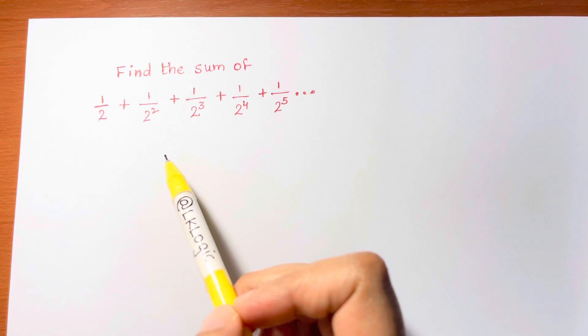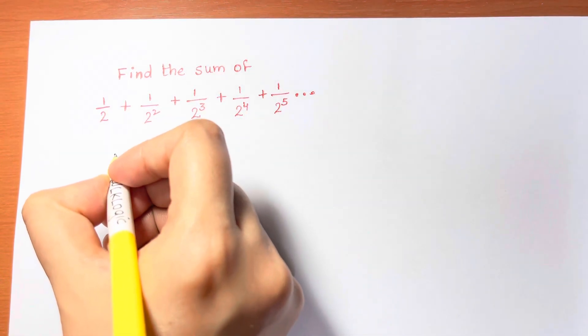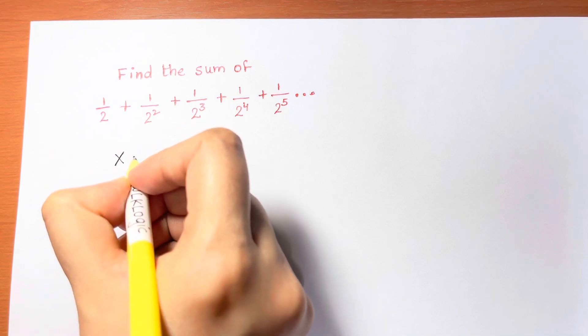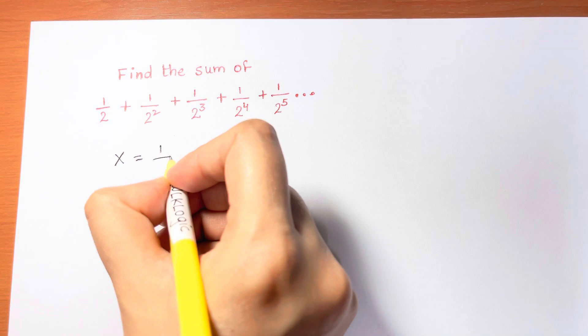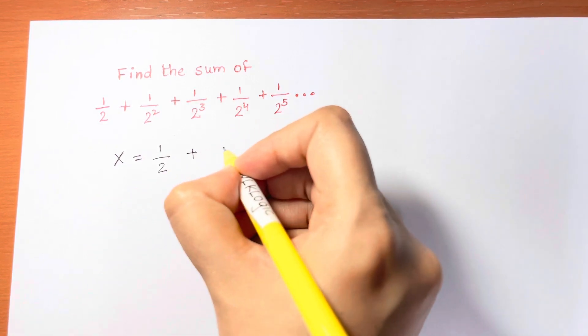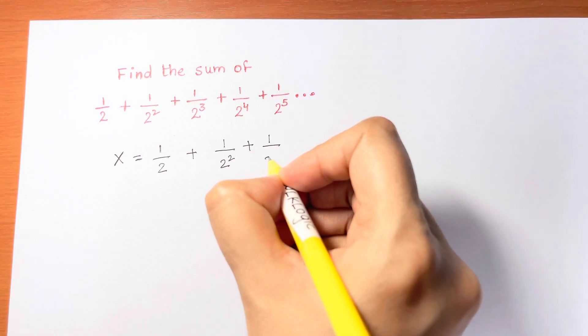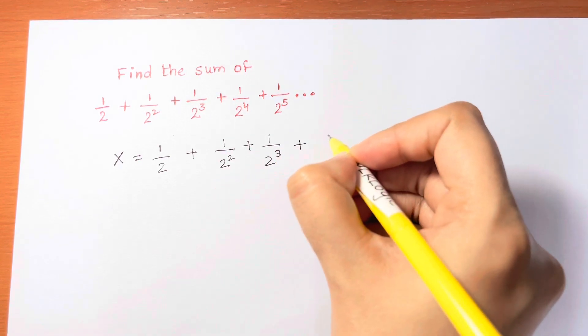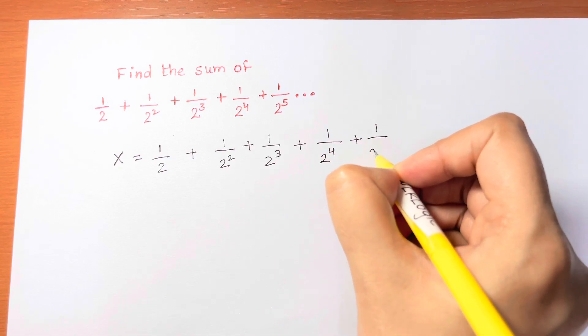So what is the logic we are going to apply here? We just put all these terms equal to x. x is equal to this whole thing, so I'm going to write that: 1 over 2 plus 1 over 2 squared plus 1 over 2 cube plus 1 over 2 to the 4 plus 1 over 2 to the 5 plus, and so on it continues.